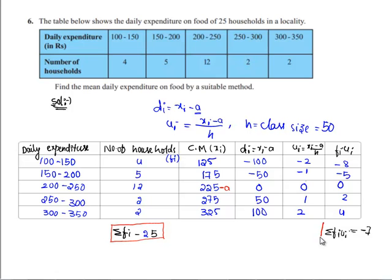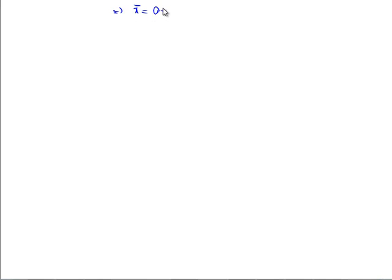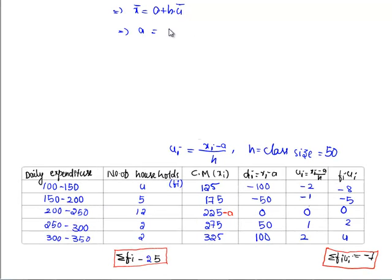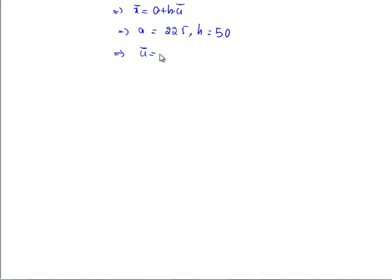Now knowing the values of sigma fi·ui and sigma fi, we use the formula: ū equals sigma fi·ui divided by sigma fi. The relation between x̄ and ū is x̄ equals a plus h into ū, where a equals 225, h equals 50, and ū equals sigma fi·ui by sigma fi, that is minus 7 by 25.